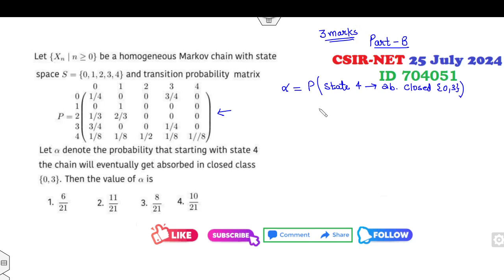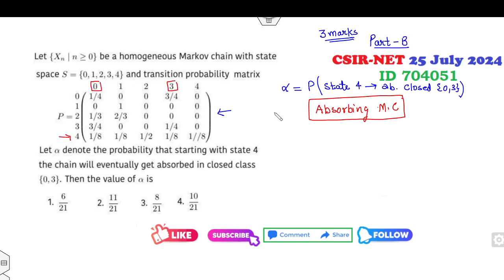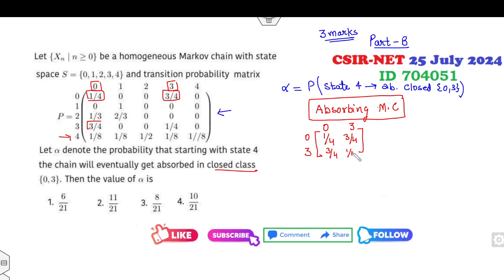This question is related to the absorbing Markov chain. The target is to start from state 4 and be absorbed in states 0 and 3. These are called closed states because if you write the submatrix corresponding to states 0 and 3, the sum of each row equals 1, confirming it is a closed communicating class.